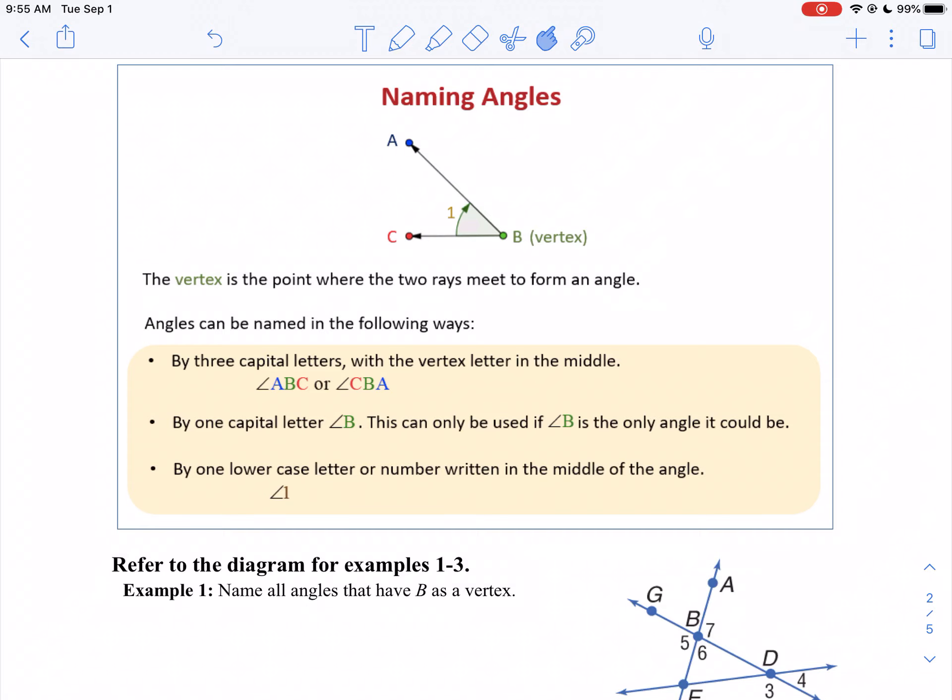When you name an angle, we name it by its vertex, so angle B. If there's more than one angle with the same vertex, we have to use three letters. The order doesn't matter as long as B is in the middle.